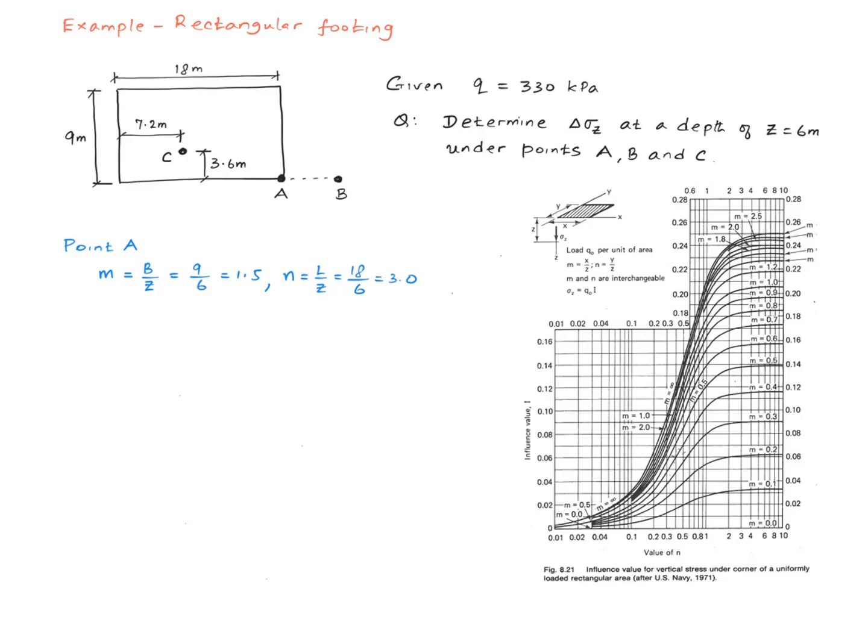So the first thing we do is calculate the dimensionless factors little m and little n. Little m is B over Z, which is 9 over 6, and that works out to be 1.5. Little n is L over Z, where L is 18 meters divided by 6, and that works out to be 3. I want to make a little note here that you could switch B and L and you will get the same answer.